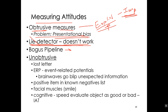So if we can't use a lie detector, how are we going to determine what people's true or implicit attitudes are? One thing we can use is the bogus pipeline. And I love this, not just because 'bogus pipeline' is just a wonderful name — bogus pipeline.